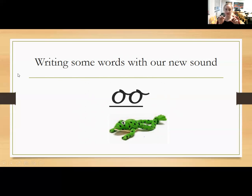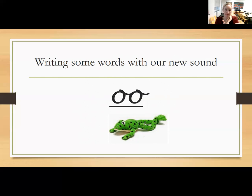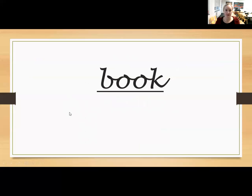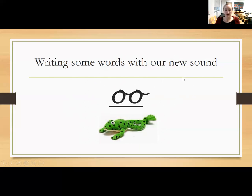Let's have a go at another word. Wiggle those fingers again and then hide one. This word is 'book.' Check how many sounds are in the word book — you should have three. My turn first: B-U-K, book. Your turn. Fabulous — have a go at writing book. Once you've done that you can pop your sound buttons underneath. Let's check: B-U-K, book. Well done if you got that one correct.